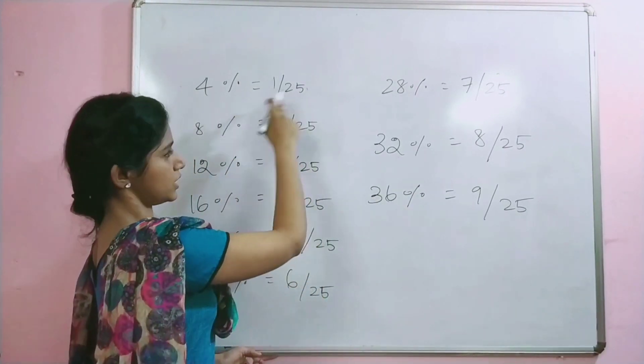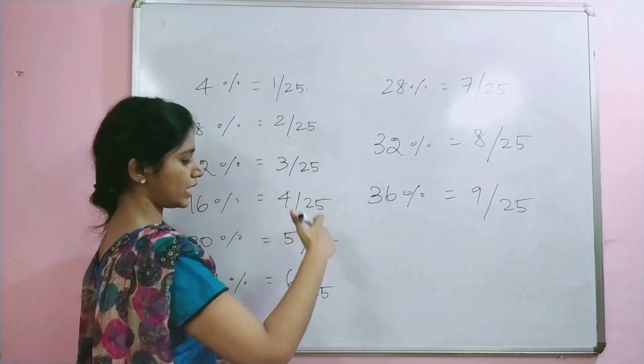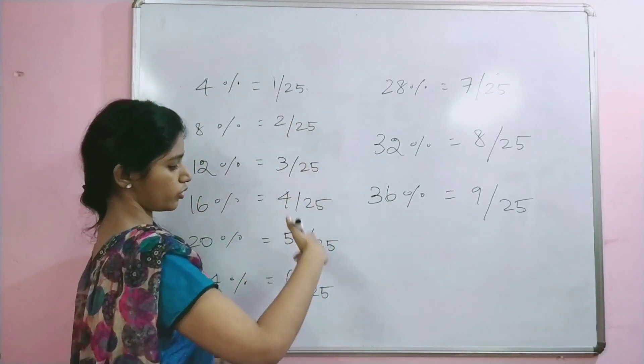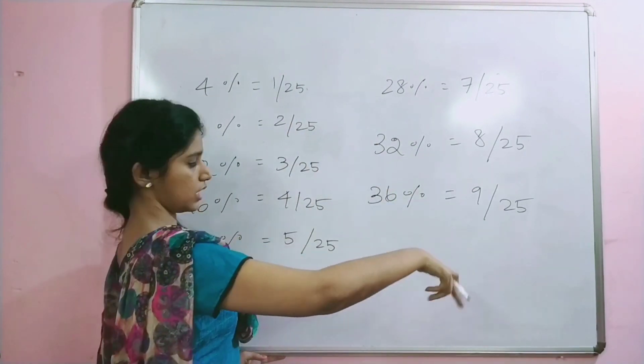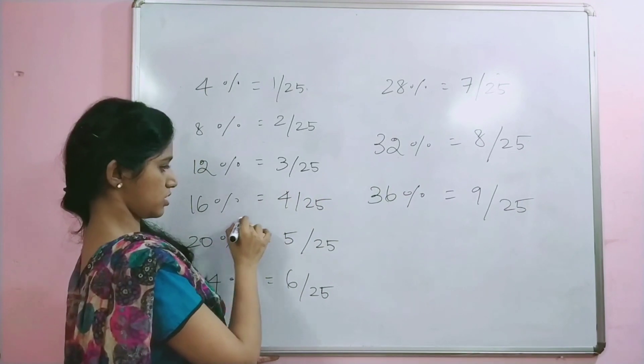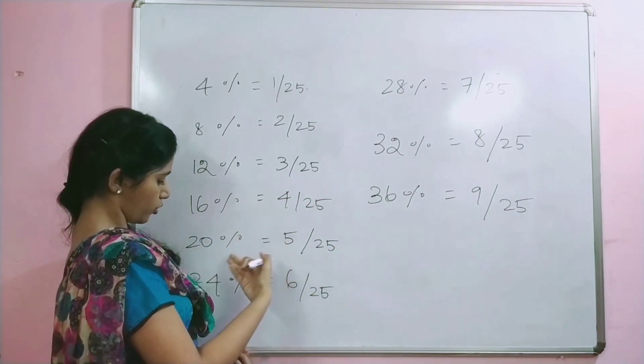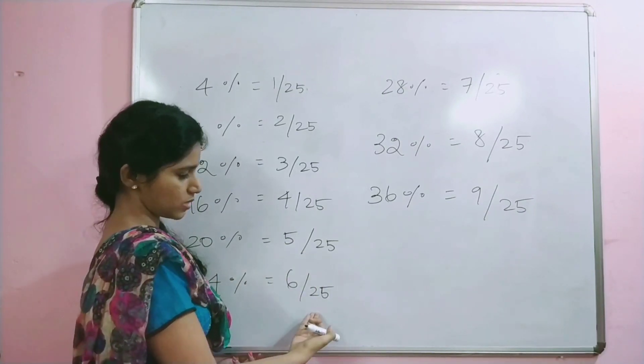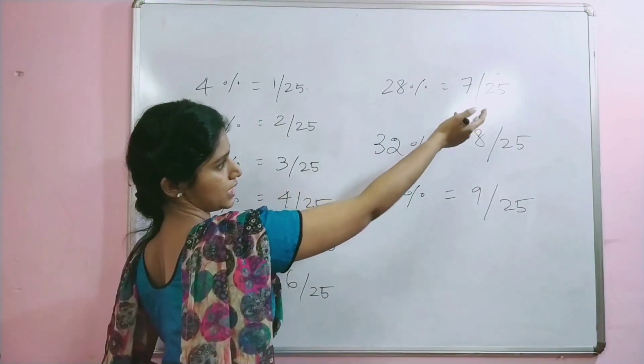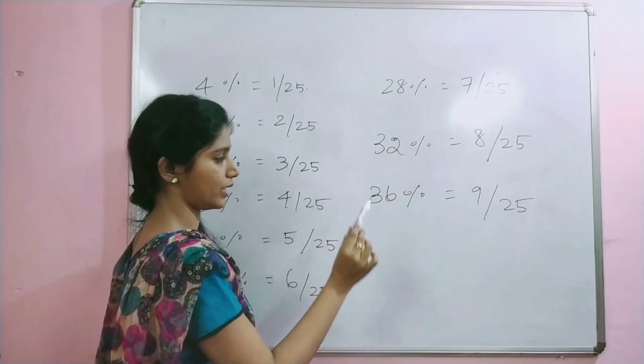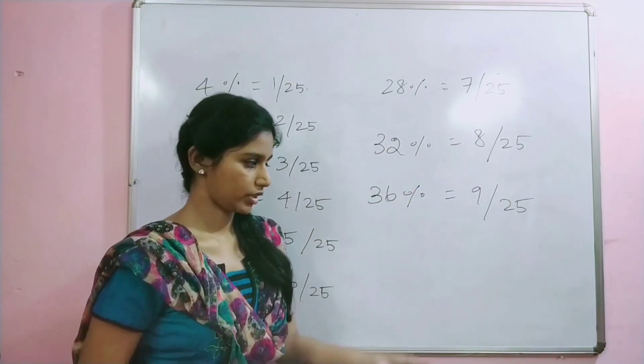Now if it is 4 percentage, 1 by 25, and we increase 1, 2, 3, 4, 5, 6. 16 is 4 by 25, 20 is 5 by 25. Multiply by 4: 24 is 6 by 25, 28 is 7 by 25, 32 is 8 by 25, 36 is 9 by 25.